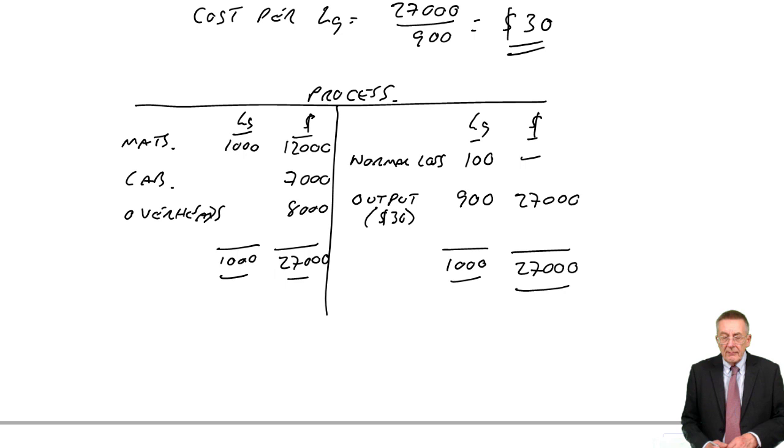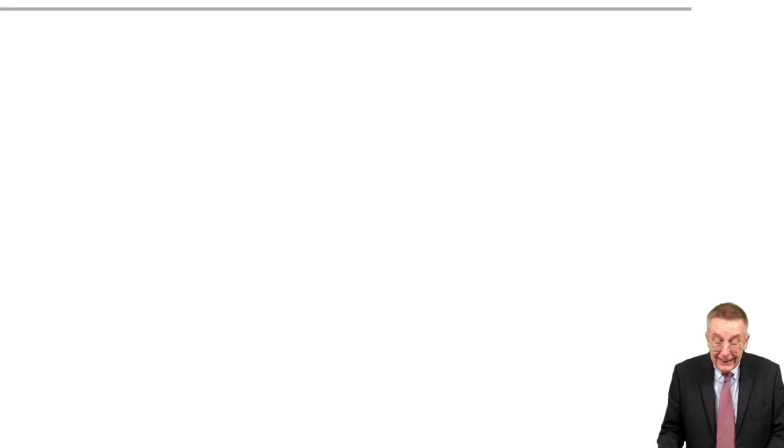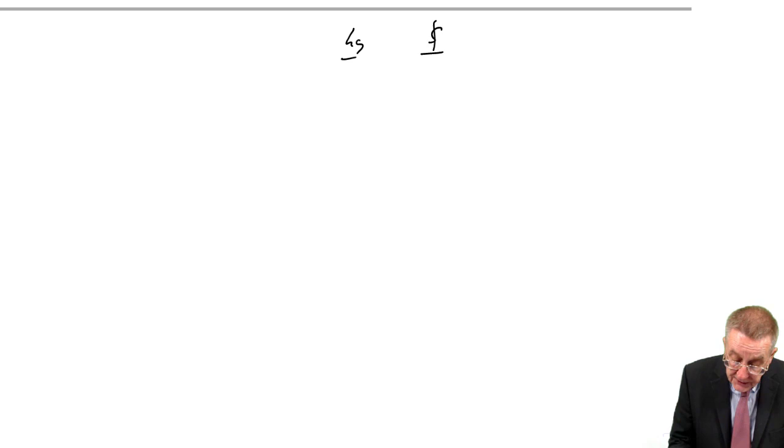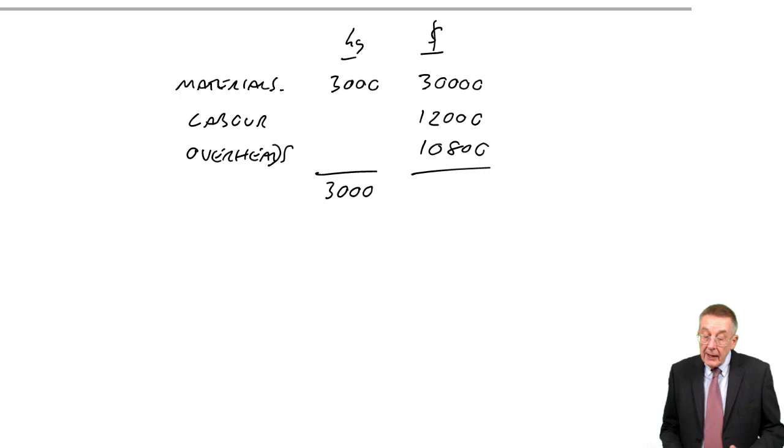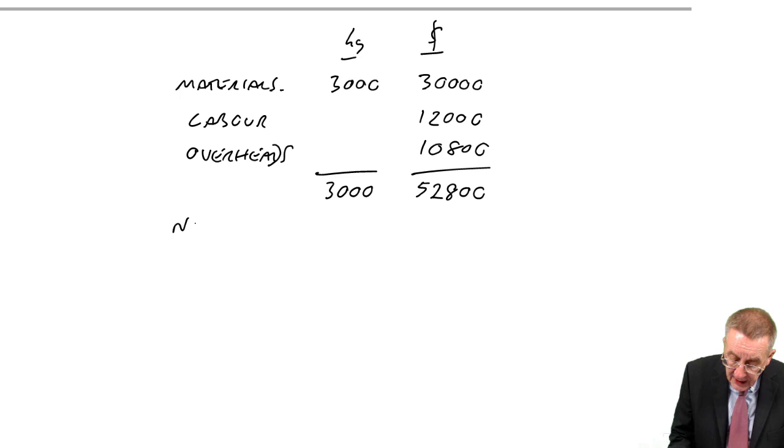Let me show you how you deal with that. Let's do our costings first. List all the costs. Materials, 3,000 kilos, $30,000. Labor, 12,000. Overheads, 10,800. And so at that stage, 3,000 kilos are there and the total cost, $52,800. Again though, there's a normal or expected loss and we build that into our costings. We don't expect there'll be 3,000 kilos. The normal loss is 10%, 300.